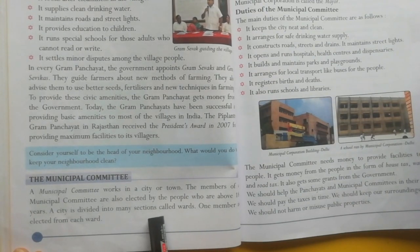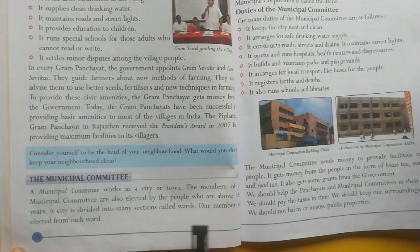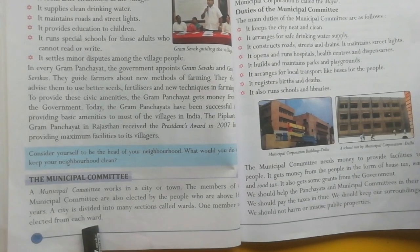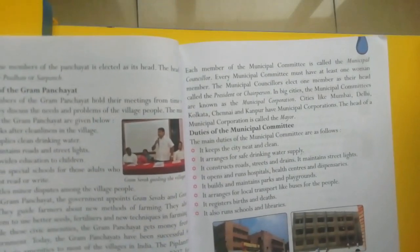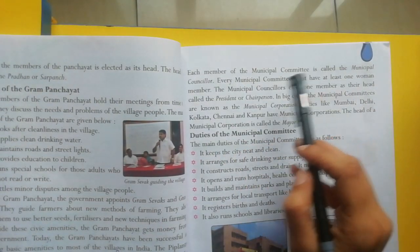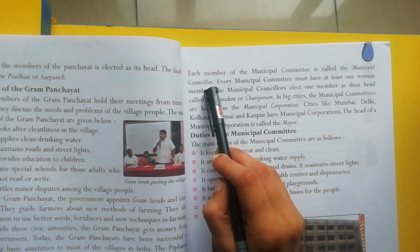A city is divided into many sections called wards. One member is elected from each ward. Each member of the Municipal Committee is called the Municipal Councilor.